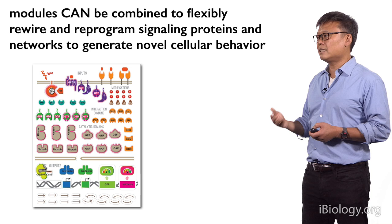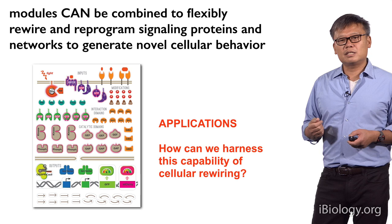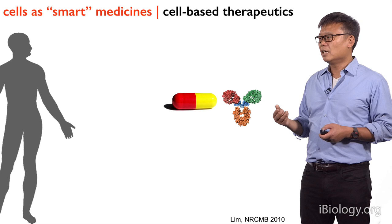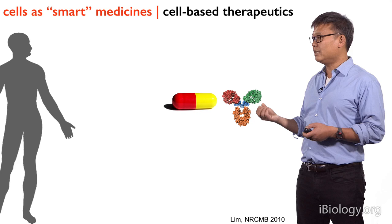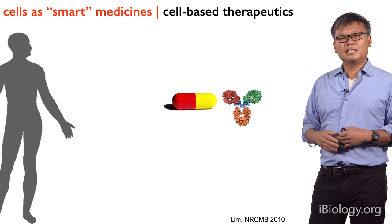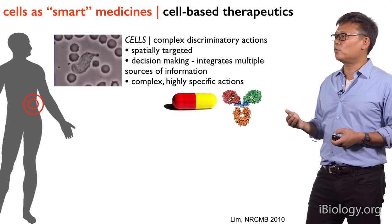One of the things we've become more interested in is asking about applications. Can we actually start harnessing this capability to rewire cells and put it to use? One of the most exciting things for us is the idea of using this in therapeutics and medicine. Mostly today when we think about medicine, we think about small molecules or biologics, which are very powerful agents. But one of the things that limits them is that they largely act in a systemic way when put into the body, and they can largely just either block or activate something — they can't actually make very complicated decisions.